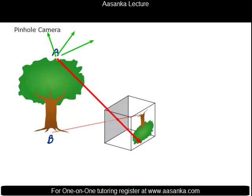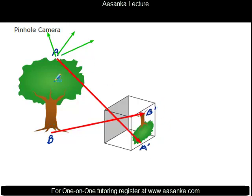Point A, which is at the top, forms its image here. Point B at the other extreme also has rays going in all directions — reflected rays — but the one that enters the pinhole forms the image at the other extreme on the screen. We call these A prime and B prime, the images of A and B respectively. All other rays in between pass through and make their corresponding images similarly.